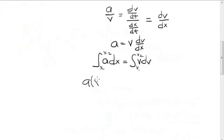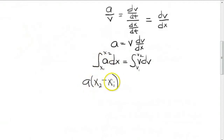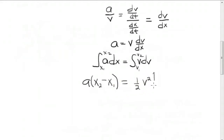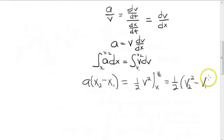Now if I do this integral, I can rewrite it and solve it. So we have the acceleration times (x2 minus x1) — that's what the left-hand integral gives. On the right-hand side, I have one-half V squared evaluated at the two velocities, giving one-half V2 squared minus V1 squared.